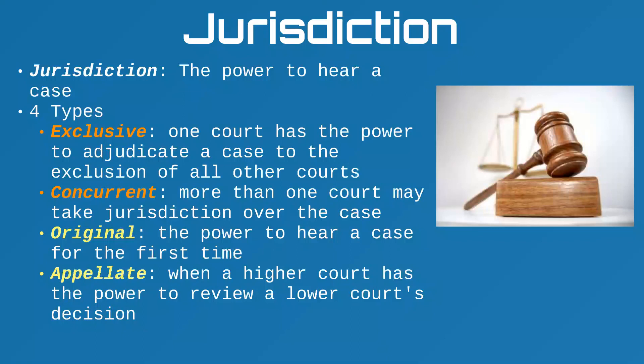There are cases that go straight to the Supreme Court — for example, if Congress is suing the President of the United States for documents or something along those lines, that case would go straight to the Supreme Court. But many of the cases the Supreme Court hears are appellate cases — cases that have been heard in lower courts, sometimes several different lower courts, and then make their way all the way up to the Supreme Court. So they have appellate power too. We're going to spend a lot more time looking at the Supreme Court and their process next time around.